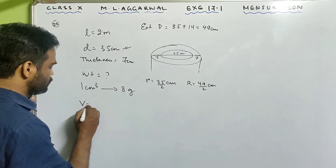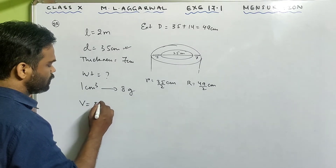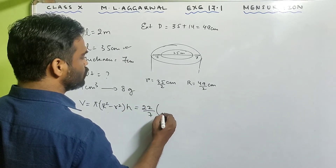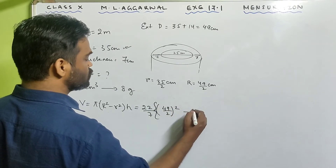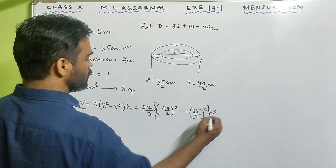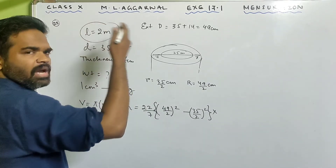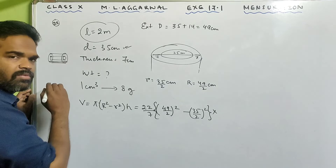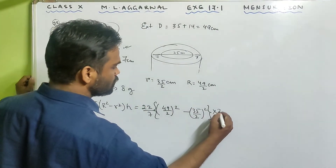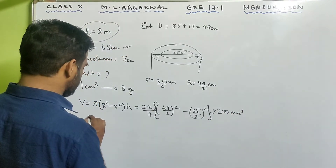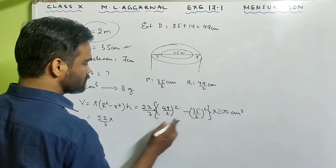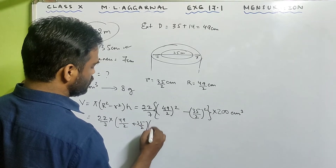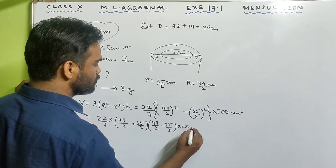Volume of the hollow roller = π(R² − r²) × h. Height = 2 m = 200 cm. Substituting: (22/7) × [(49/2)² − (35/2)²] × 200. Using a² − b² = (a+b)(a−b): (49/2 + 35/2)(49/2 − 35/2) = (84/2)(14/2) = 42 × 7. So volume = (22/7) × 42 × 7 × 200 cm³.